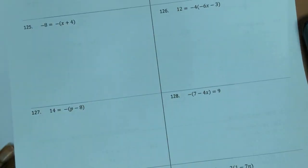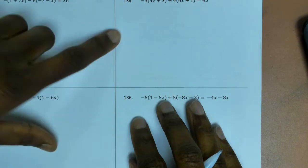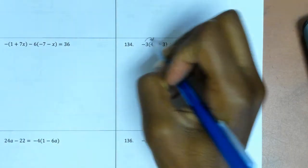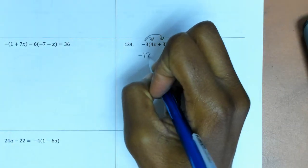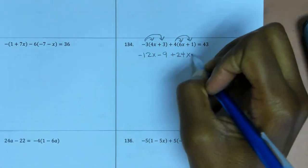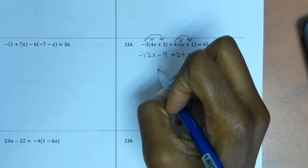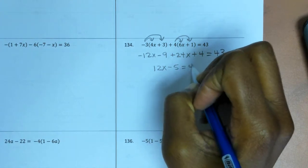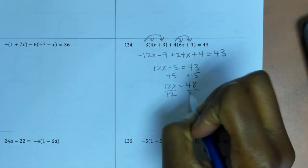One more with parentheses: use the distributive property. Distribute −3 to both terms: −3 × 4x = −12x, −3 × 3 = −9. Then 4 × 6x = 24x, 4 × 1 = 4. Combine like terms: −12x + 24x = 12x, and −9 + 4 = −5. So 12x − 5 = 43. Add 5: 12x = 48. Divide by 12: x = 4.